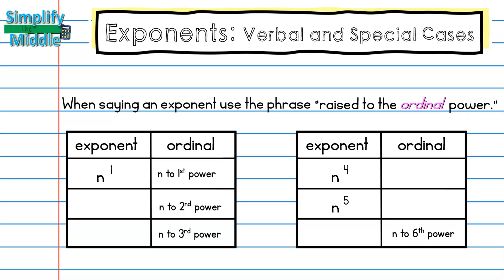Here I have two charts. I have the exponent version of the number, the exponential form, and then I have the ordinal version of the number. So here I have n, the base, with a power or exponent of 1, so we say this as n to the first power.